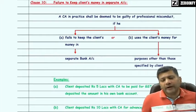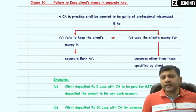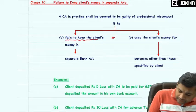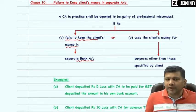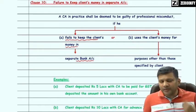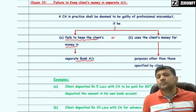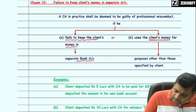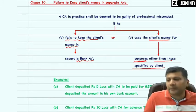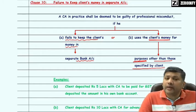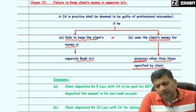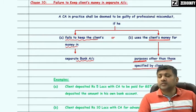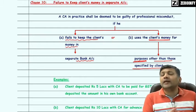The last clause of Part 1 of Second Schedule is Clause 10. It states that a practicing CA shall be deemed to be guilty of professional misconduct if he fails to keep the client money in a separate bank account. If a practicing CA receives client money, that money needs to be deposited in a separate bank account or applied only for the purposes for which the client provided the money. Using the client money for purposes other than those specified by the client, or depositing the amount along with his own money, constitutes misconduct.